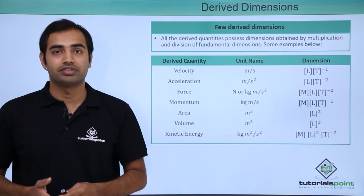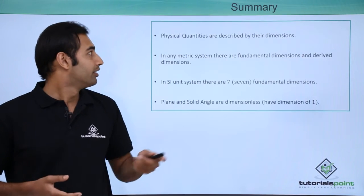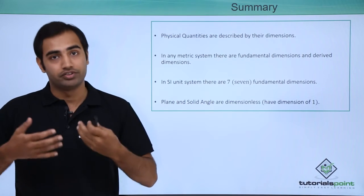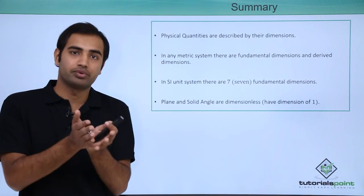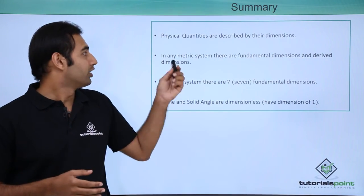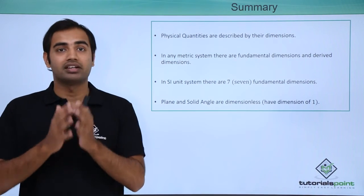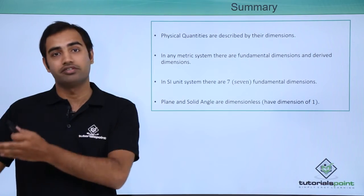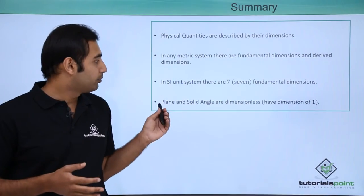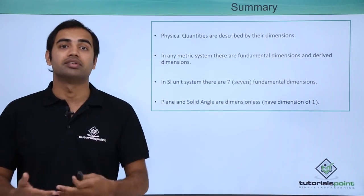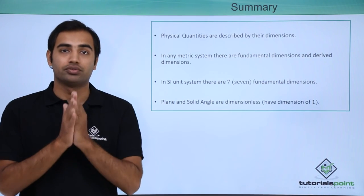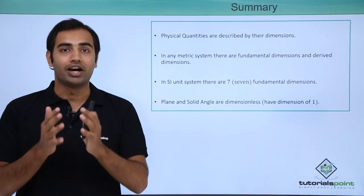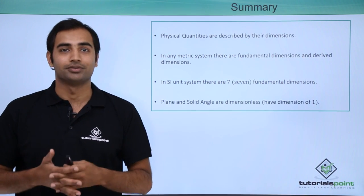To summarize what we just learned: physical quantities are described by their dimensions, meaning any physical quantity will possess some dimension. In any metric system, there are fundamental dimensions and derived dimensions, just like fundamental quantities give rise to derived quantities. Plane angle and solid angle are dimensionless — or have a dimension of 1 — even though they are defined as fundamental entities in SI units.